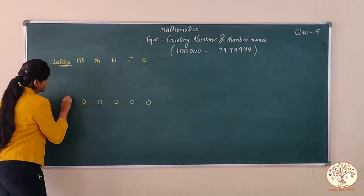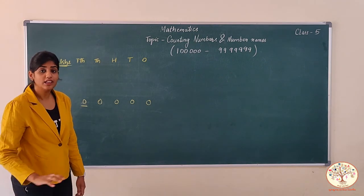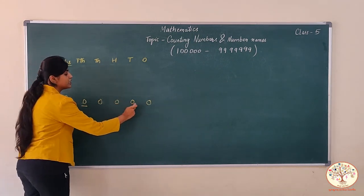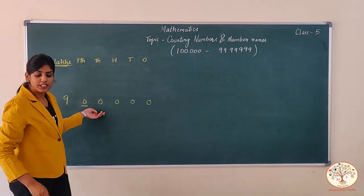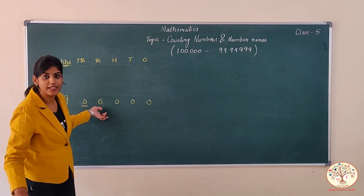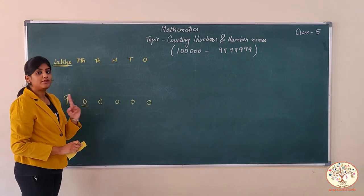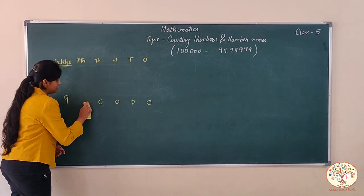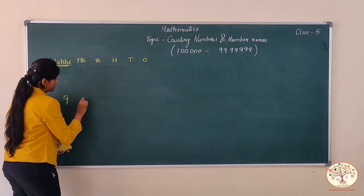The counting goes on till nine lakh. Now how many zeros are there? Count: one, two, three, four, five. We can also change this number from zero to one, two, three, four, five, six, seven, eight, nine. The largest five-digit number you already know — let's put it here.